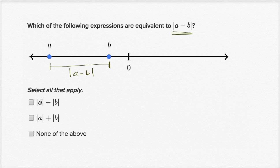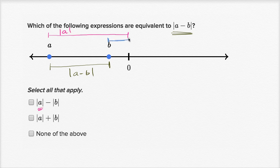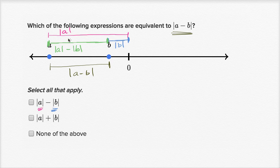So which of these expressions are equivalent? The first one has the absolute value of a minus the absolute value of b. The absolute value of a is the distance that a is from zero — that's the absolute value of a. And the absolute value of b is the distance that b is from zero — that's the absolute value of b. So if you take the absolute value of a minus the absolute value of b, you're going to be left with this distance. This distance is the absolute value of a minus the absolute value of b.